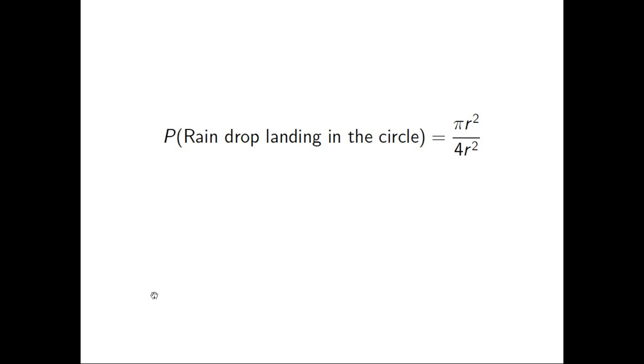then we get the probability that a raindrop lands in the circle is pi r squared divided by 4r squared, so the area of the circle divided by the area of the field.